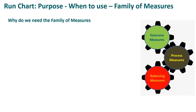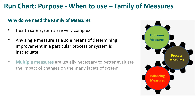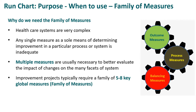So why do we need the family of measures? Because healthcare systems are incredibly complex, any single measure as a sole means of determining improvement in a particular process or system is inadequate. What we need is multiple measures — they are necessary to better evaluate the impact of changes on the many facets of the system or process. Improvement projects typically require a family of measures, say five to eight key global measures.